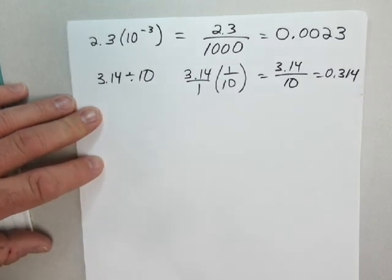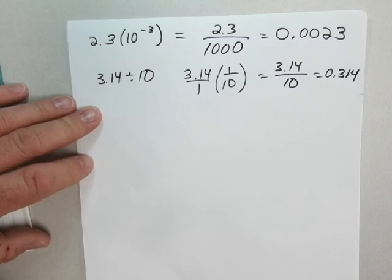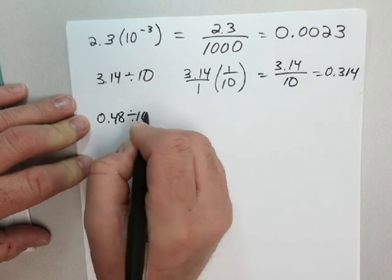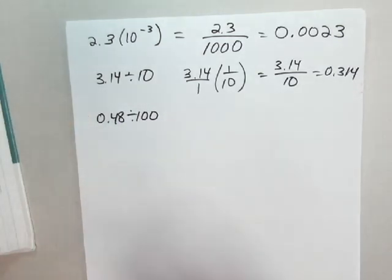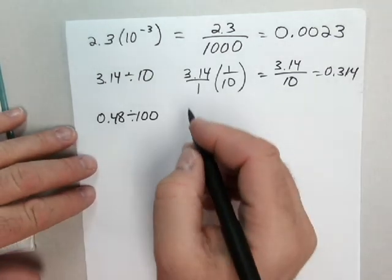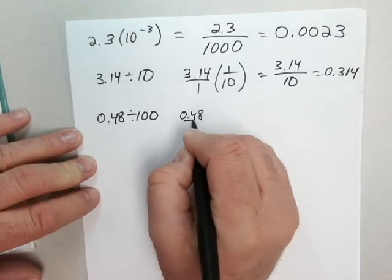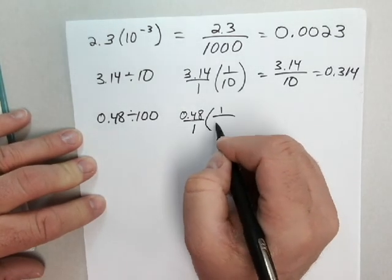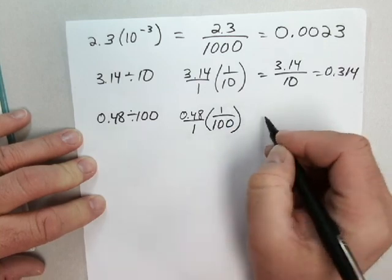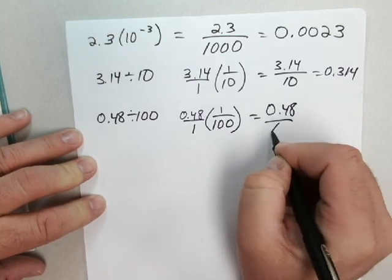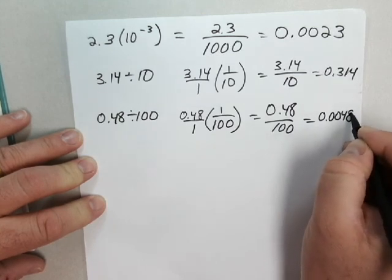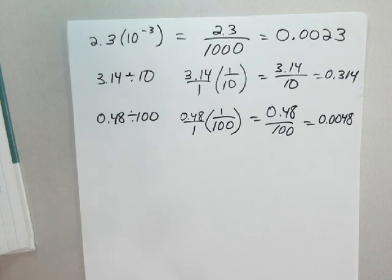Part B. 0.48 divided by 100. If I blow it out into fractional form here, 0.48, call that a fraction over 1. And instead of saying divide it by 100, I can say times 1 over 100. 0.48 over 100. Move that decimal two places to the left. 0.0048.